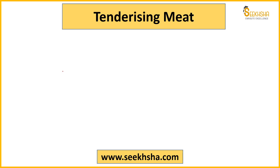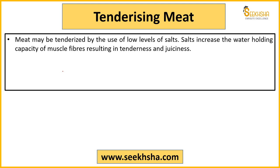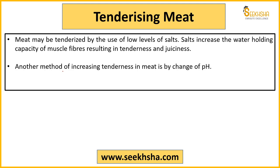Tenderization methods include pounding — beating and cutting the meat — grinding, using needles and holes, ultrasonic vibrations, adding juices to soften, wrapping the meat, and using salt to change water holding capacity. Also, exercise of animals helps — animals that move and exercise have more tender meat compared to those with restricted movement.